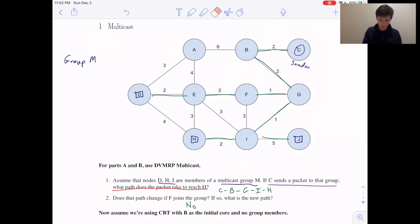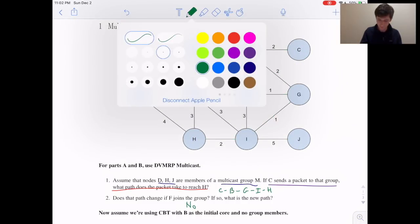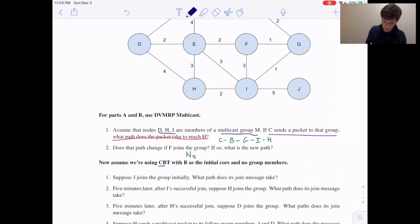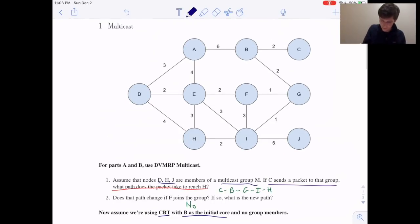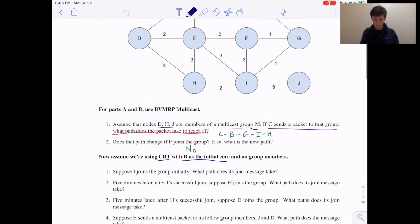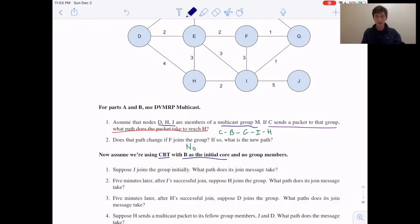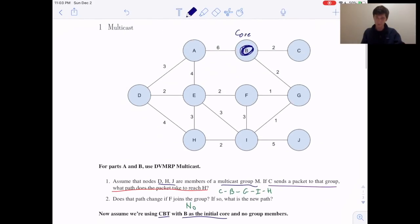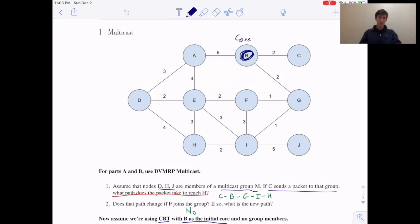Okay, so now let's look at core-based trees. And I'm going to erase everything that's on our tree here, on our network here, so it doesn't bother us. In part two, we're using core-based trees where B is our initial core. Here's B, our core. Suppose J joins the group initially. What path does its join message take? Well, remember, with core-based trees, to join a group, a host just sends a join message to the core.